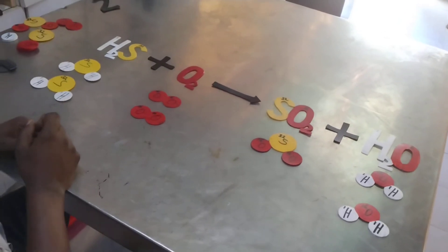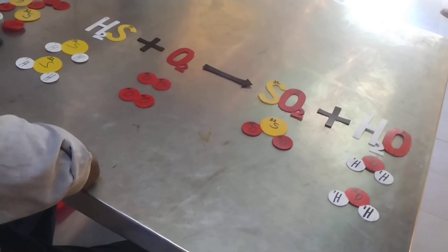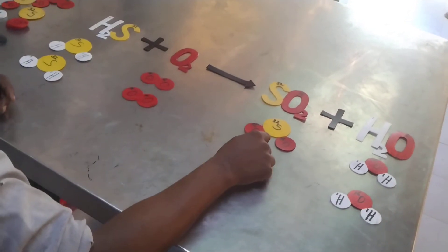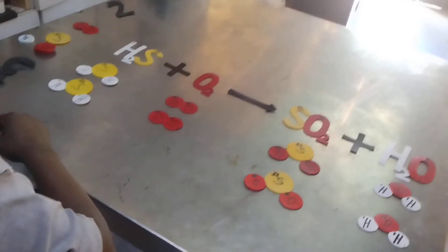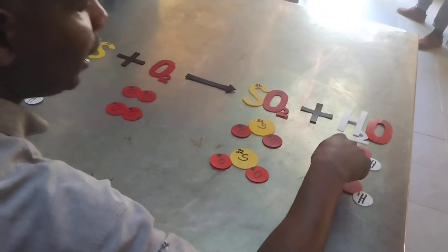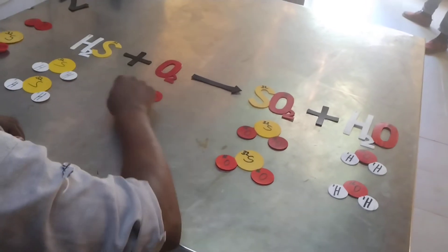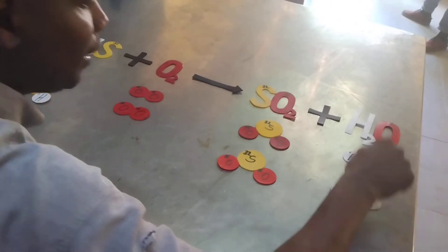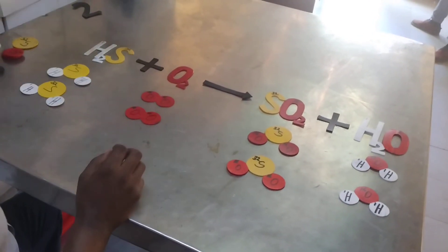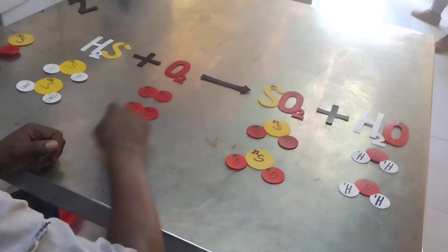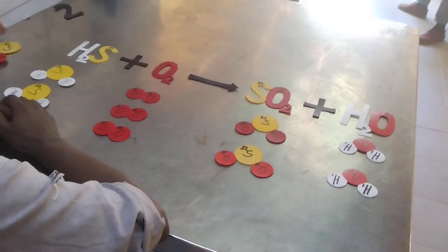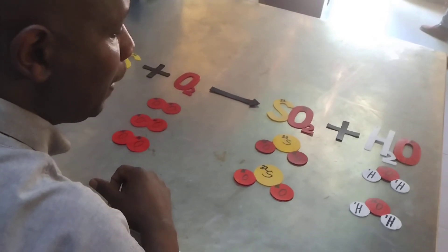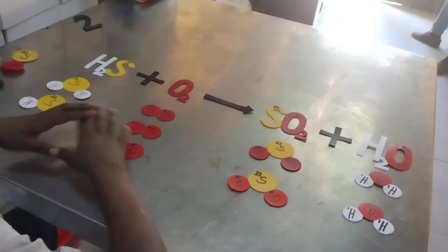By adding hydrogen sulfide, we've increased sulfur on the reactant side to two atoms, while we only have one on the product side. So we add another molecule of sulfur dioxide, giving us two sulfur atoms on each side. Checking oxygen: the product side now has six oxygen atoms, so we add another molecule of oxygen to the reactant side. Now we have six oxygen atoms on each side — sulfur, hydrogen, and oxygen are all balanced.